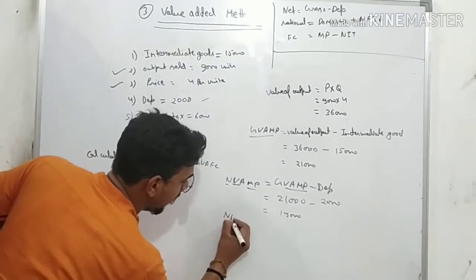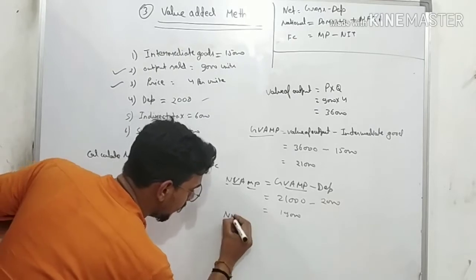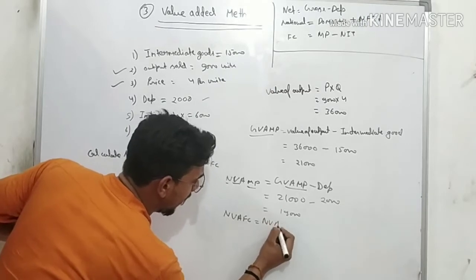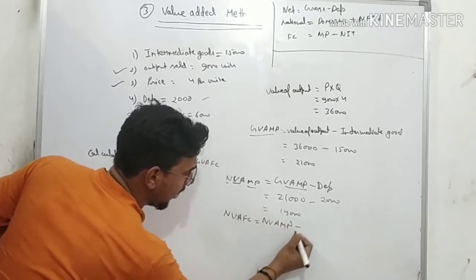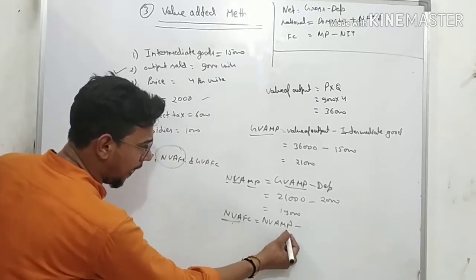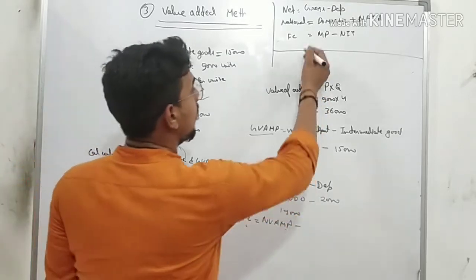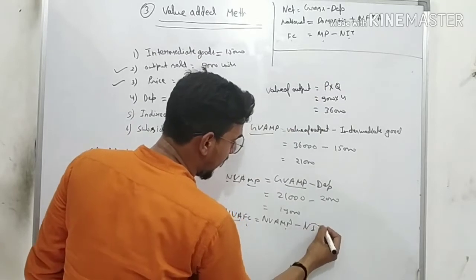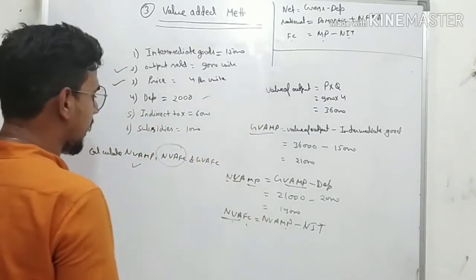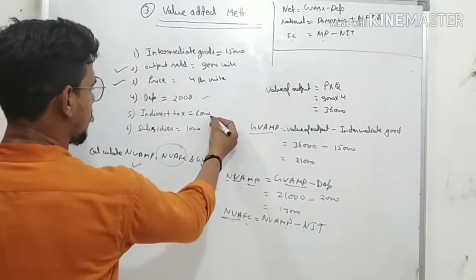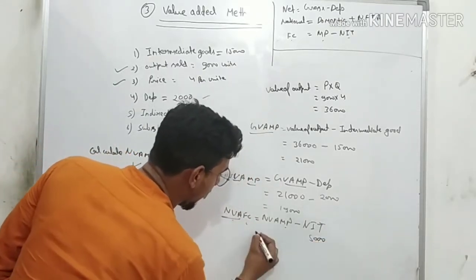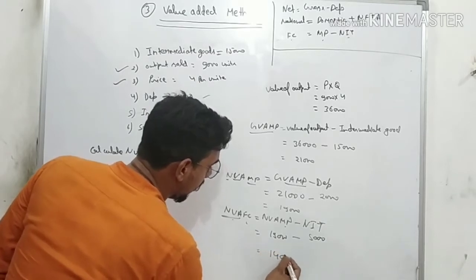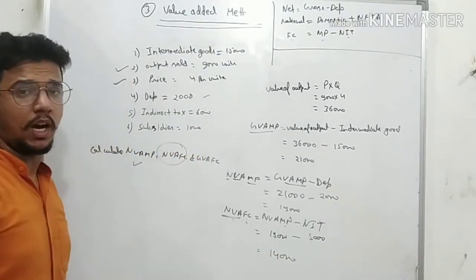Next, find NVAFC. You've already found NVAMP = 19,000. Everything is the same — only the difference is Market Price vs Factor Cost. To convert to Factor Cost, subtract NIT from Market Price. NIT = 6,000 − 1,000 = 5,000. So NVAFC = 19,000 − 5,000 = 14,000.